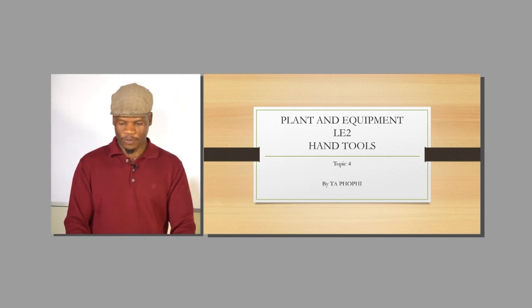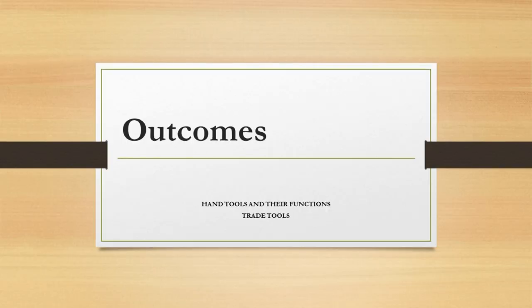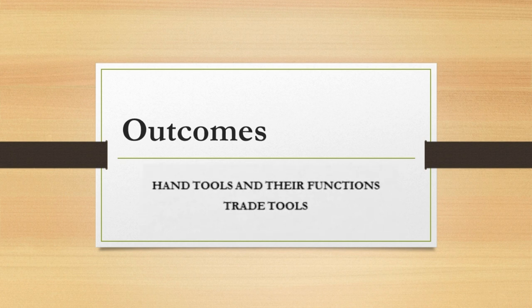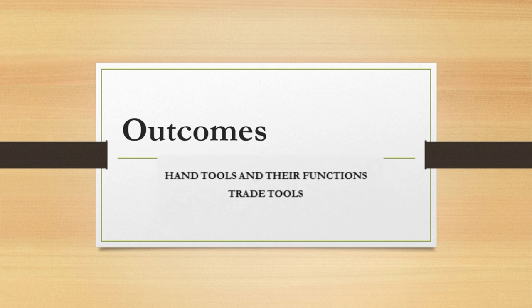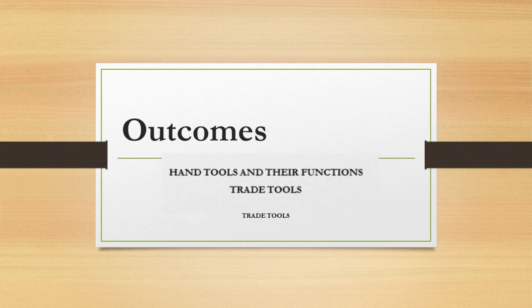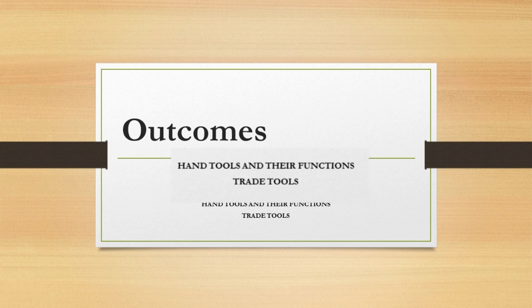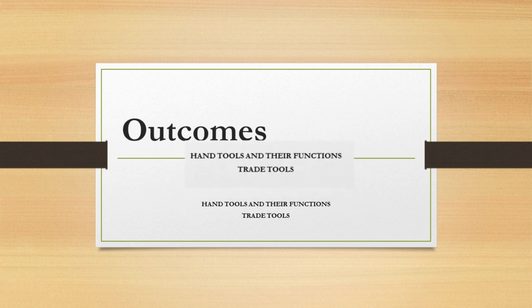The outcomes that we're going to cover are only two outcomes. You must be able to know how to use the hand tools, and you must also know their function and be able to identify them. Lastly, you must be able to know how to cluster them according to the trade that they belong to.